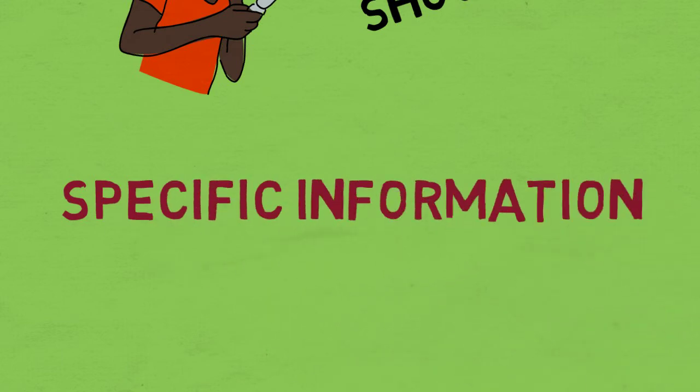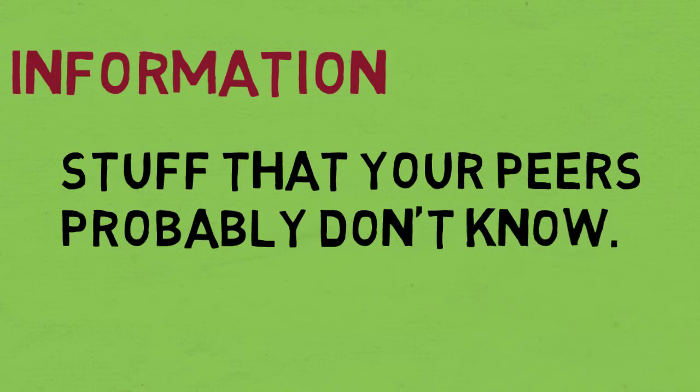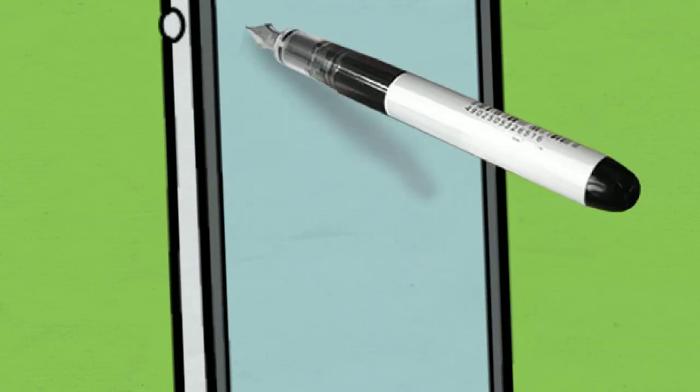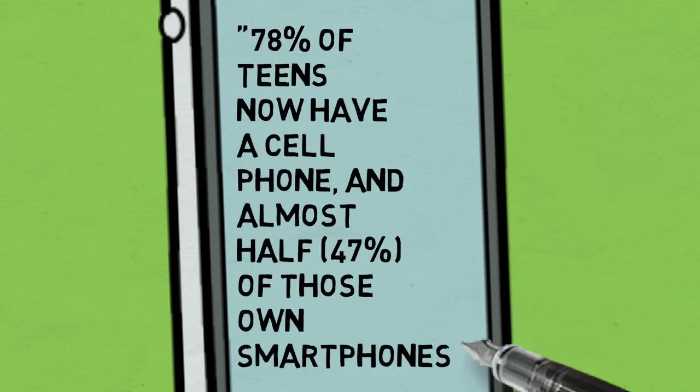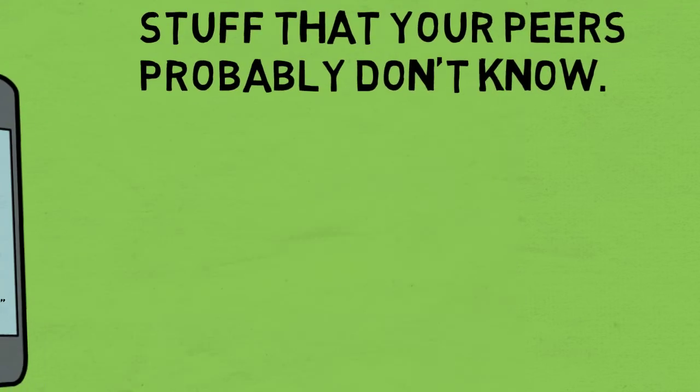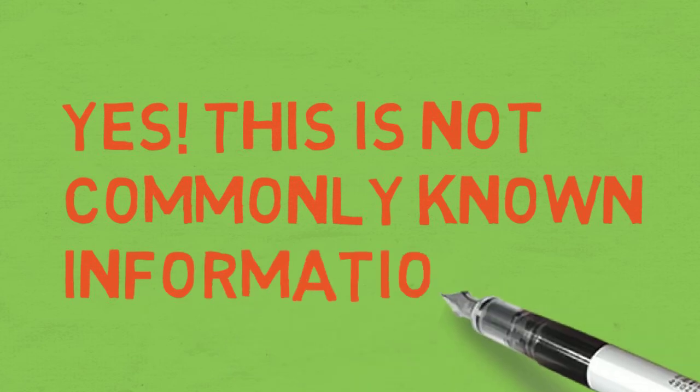On the other hand, specific information is different. This type of information is not known by everyone. Many facts and almost all statistics are considered specific information. This information should always be cited because it is not commonly known.